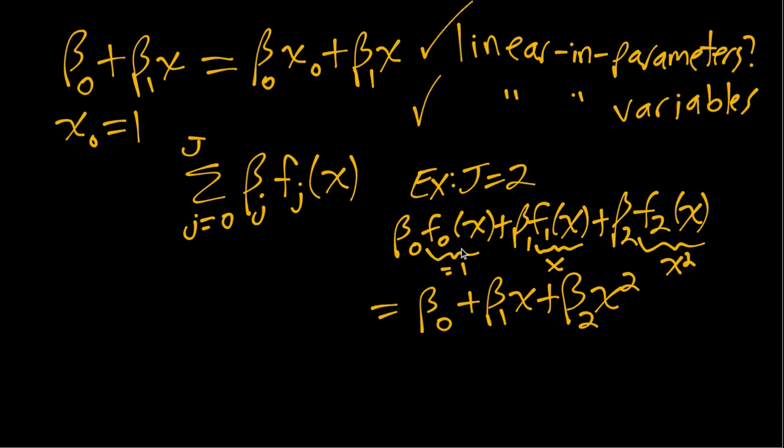Now there are occasionally some functions in certain economic models that are also nonlinear in parameters. For example, nonlinear in variables. So as an example, if we have beta naught times x to the beta one power, this is no longer even a linear combination of beta zero and beta one. We have beta one appearing up in this exponent, so this is nonlinear in both.